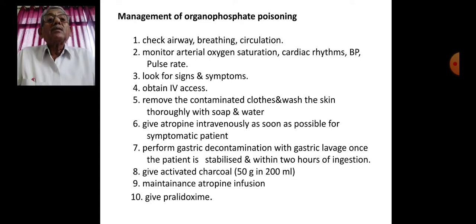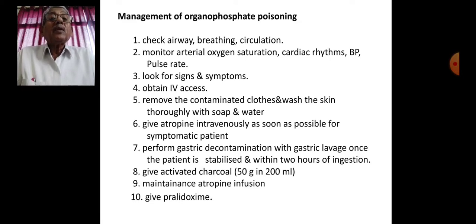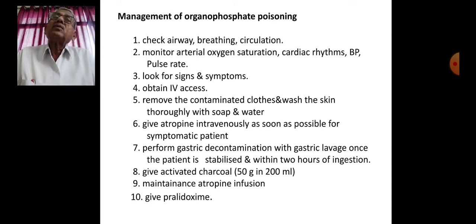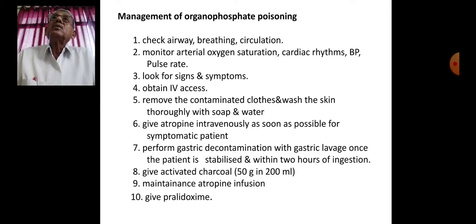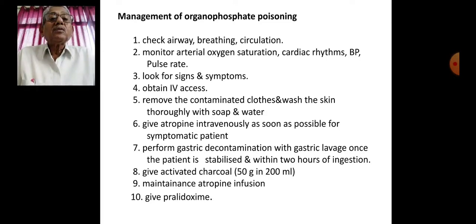Once IV access is obtained, give atropine intravenously for symptomatic patients. Perform gastric decontamination with gastric lavage once the patient is stabilized and within 2 hours of ingestion — after 2 hours it is not very helpful. Then give activated charcoal, maintain atropine infusion, and you can also give pralidoxime.